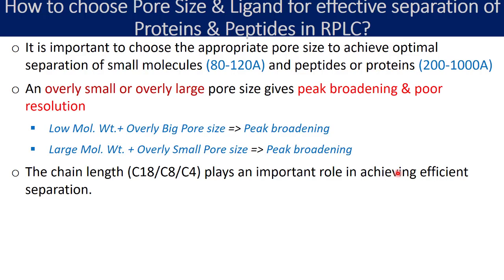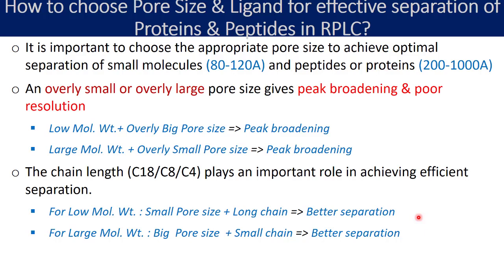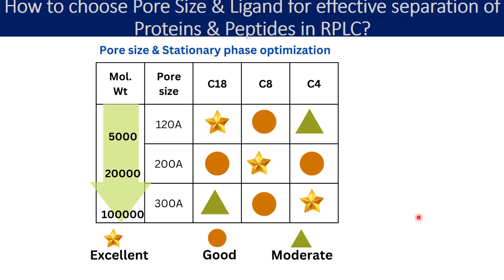The second important point is the role of the stationary phase or the ligand chain length — C18, C8, or C4. The chain length of the ligand also plays a very important role in achieving effective separation or resolution. For low molecular weight compounds with a small pore size and a long chain stationary phase like C18, you can expect better separation. For larger molecules with a big pore size and a short chain like C4, you can expect better separation.